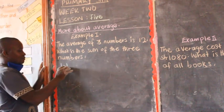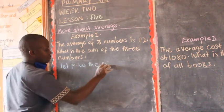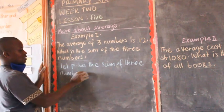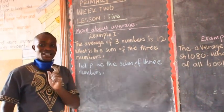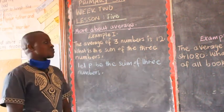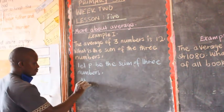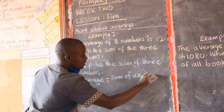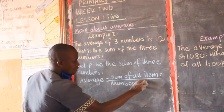Let P be the sum of the three numbers. Now the sum of our three numbers is letter P. Where we have the sum of items, we replace that with letter P, because P is representing the sum. Therefore, we set our formula: average equals sum of all items divided by number of items.